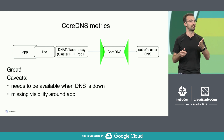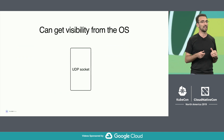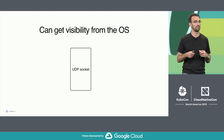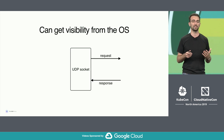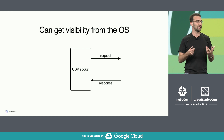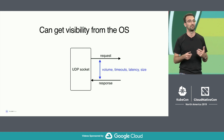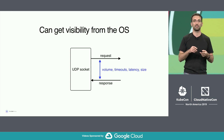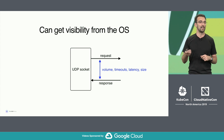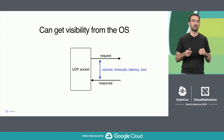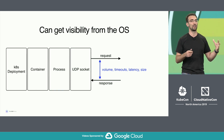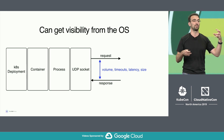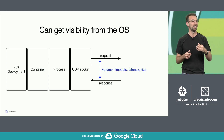To get application-level visibility into DNS, you can get this from the operating system. If you monitor UDP sockets and look at all the DNS requests and responses, you can analyze them and get the same type of metrics — volume, timeouts, latency, and size. By also monitoring processes and containers, it becomes possible to use the Kubernetes API and see what service has been making these DNS calls, giving you a per-service view of DNS behavior.